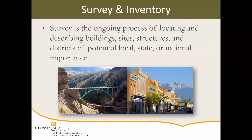Now that you have an idea of who the players are in historic preservation, let's take a look at the activities and programs we use to accomplish our preservation goals. The preservation process usually begins with survey and inventory, most commonly referred to simply as survey. Survey is the ongoing process of locating and describing buildings, sites, structures, and districts of potential local, state, or national importance. The primary goal is to document historic properties so that they can be evaluated for their significance for the various levels of registration that exist. We want to understand why a property is important and whether it is important on the national, state, or local level.